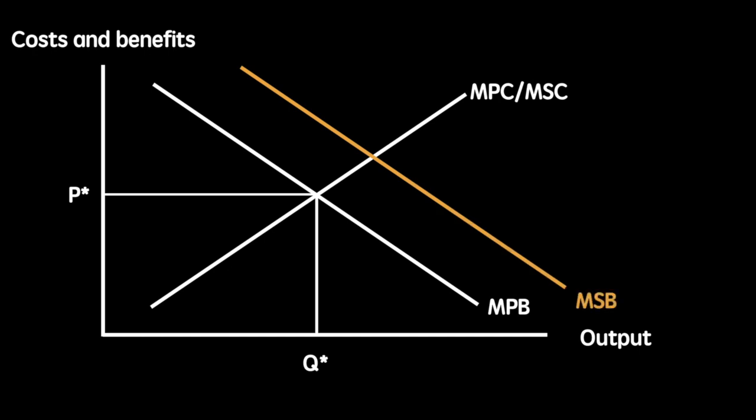The marginal social benefit includes the benefit to the individual and to all third parties. You'll notice it is to the right of the original marginal private benefit curve. The socially optimal level of output is QS at a price of PS. If this market was left to operate without any intervention, the result would be that this good would be under-provided when we consider the additional benefits tied to the externality. Therefore, we say that there is a welfare loss or deadweight loss represented by a triangle XYZ, which I will now display.